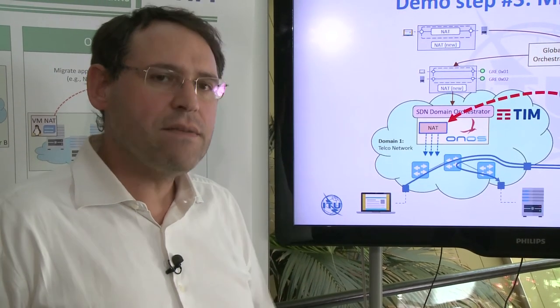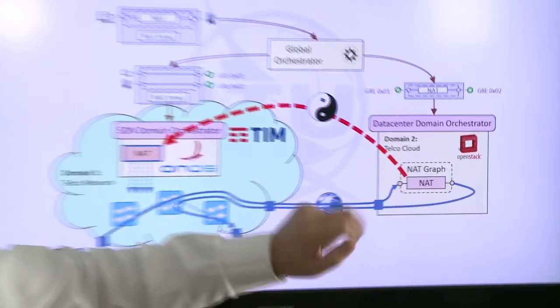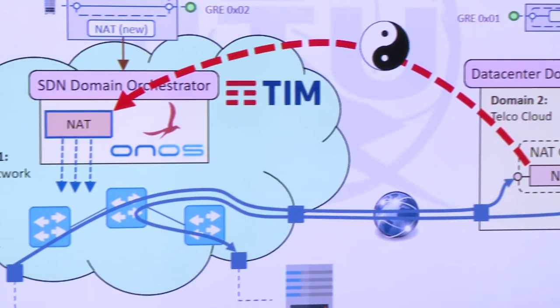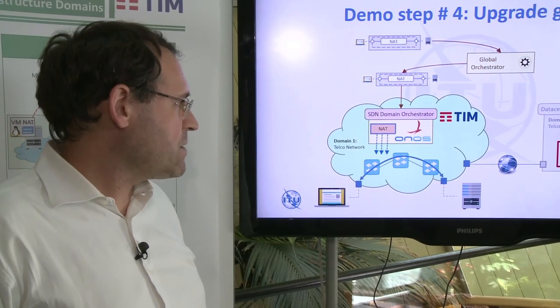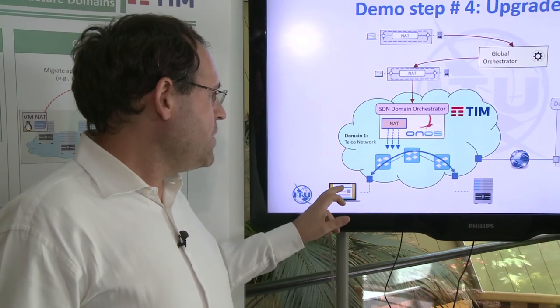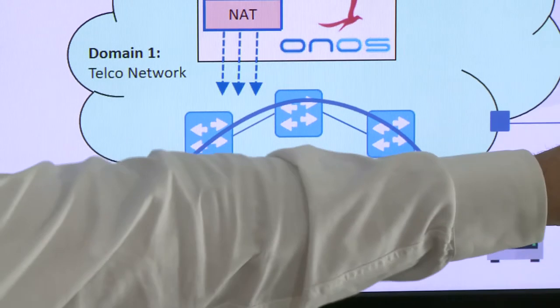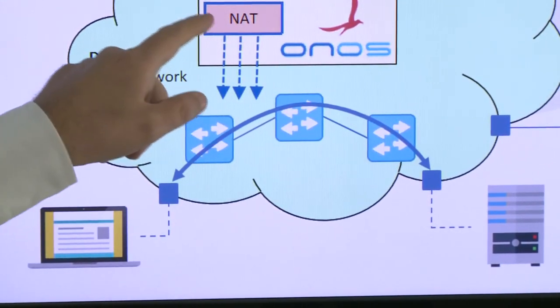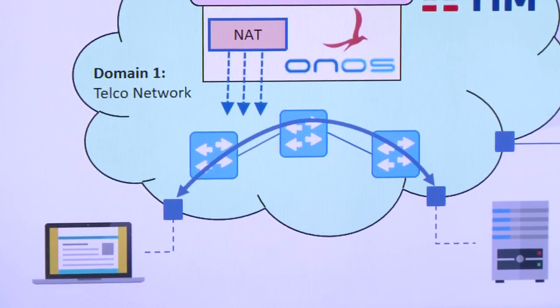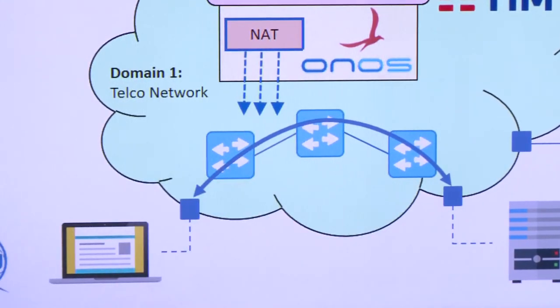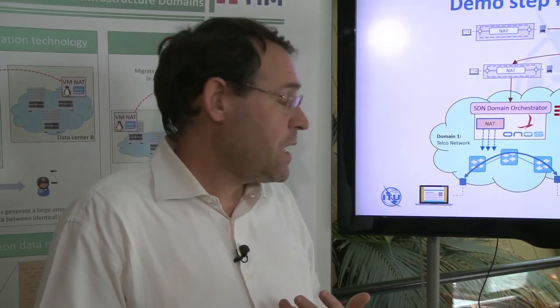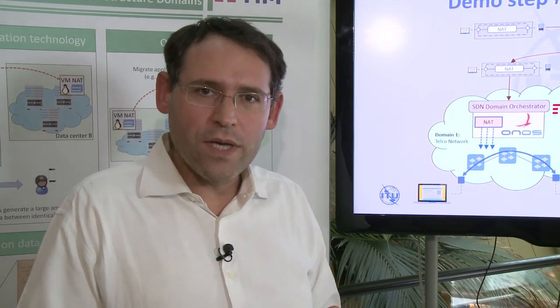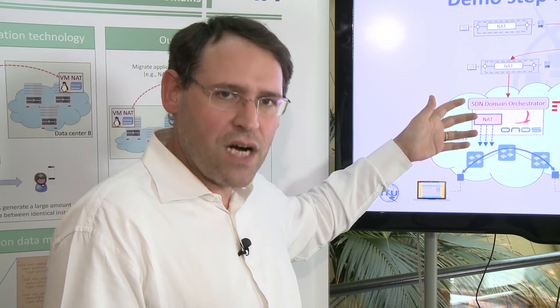In step three, we migrate the state — taking the state from the NAT in the data center and migrating it to the SDN domain orchestrator, so both instances now have exactly the same information. In the final step, we change the traffic graph so traffic flows through the SDN domain only, completely bypassing the original NAT. The connection and data transfer running throughout this process experience no interruption, and performance improves significantly because the NAT is now local, implemented in hardware.